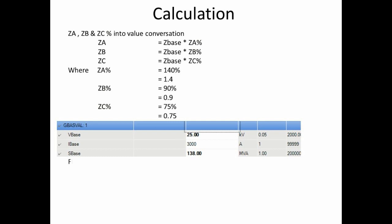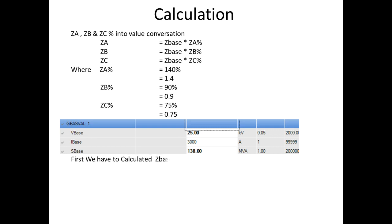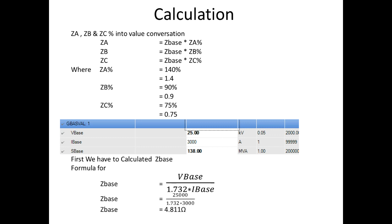We have to check in the relay that the voltage and current ratings are set correctly — that is, V_base and I_base — because this protection mainly calculates from the base value. The formula for Z_base is: Z_base equals V_base divided by (I_base times 1.732). Here V_base is 25 kV and I_base is 3000 amps. Substituting and simplifying, we get Z_base equal to 4.811 ohms.